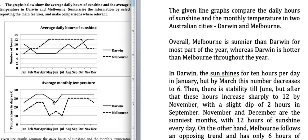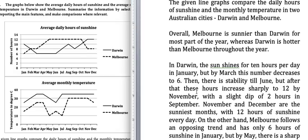In Darwin the sun shines for 10 hours per day in January. But by March this number decreases to 6. Then there is stability till June. But after that these hours increase sharply to 12 by November, with a slight dip of 2 hours in September. So from June onwards the hours of sunshine are going up, increasing sharply to 12 by November with that slight dip in September.